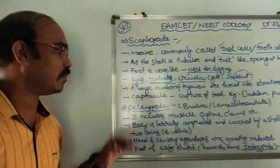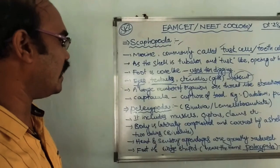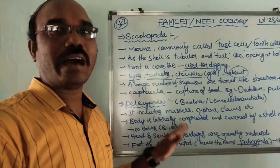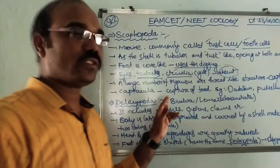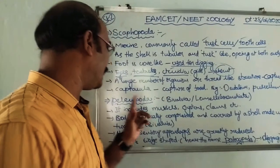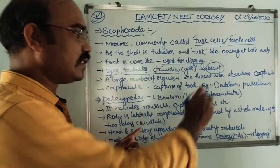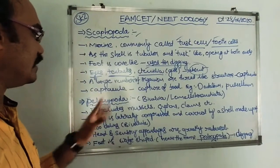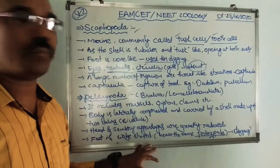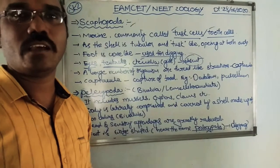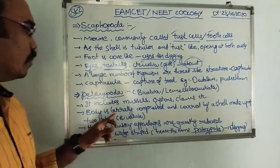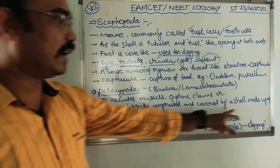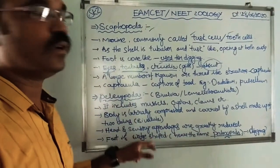Coming to Pelecypoda. These are the bivalve molluscs, also called Lamellibranchiata. This class includes most of the mussels and oysters. The body is laterally compressed and covered by a shell made up of two valves.